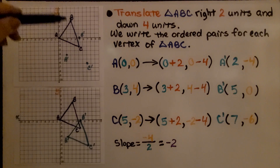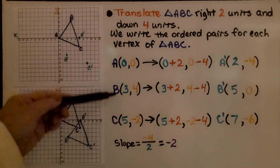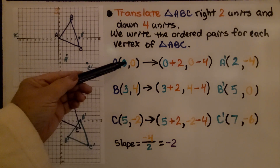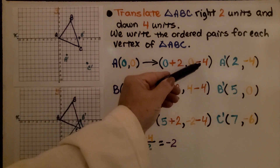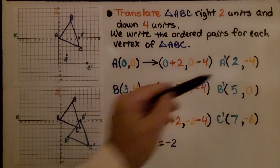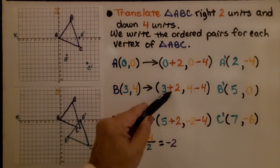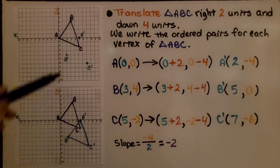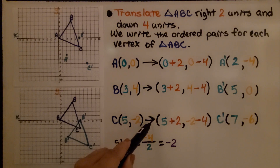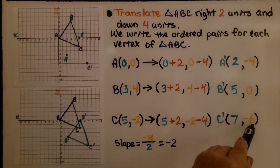Here we have our pre-image triangle ABC, and we're told to translate triangle ABC right two units and down four units. We write the ordered pairs for each vertex. A is at (0, 0), which translates to (0+2, 0−4), putting A prime at (2, −4). B is at (3, 4), which translates to (3+2, 4−4), so B prime is at (5, 0). C is at (5, −2), which translates to (5+2, −2−4), putting C prime at (7, −6).